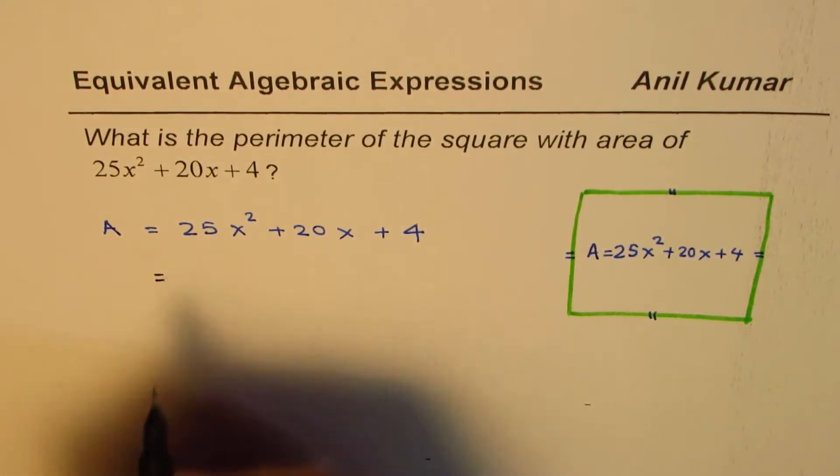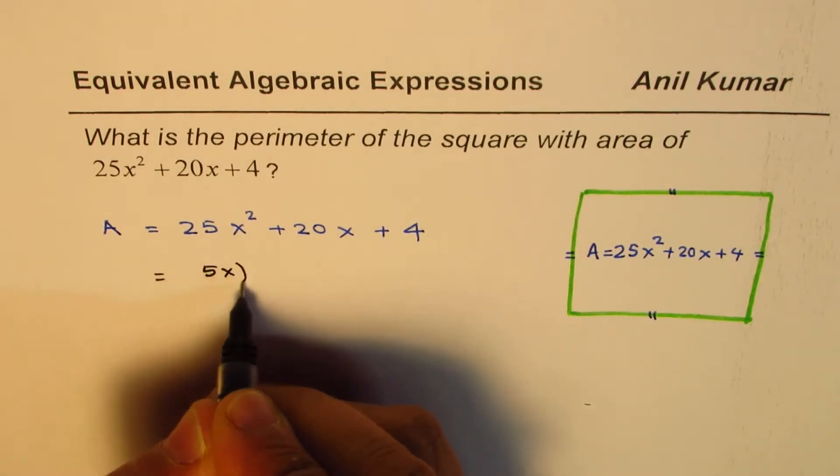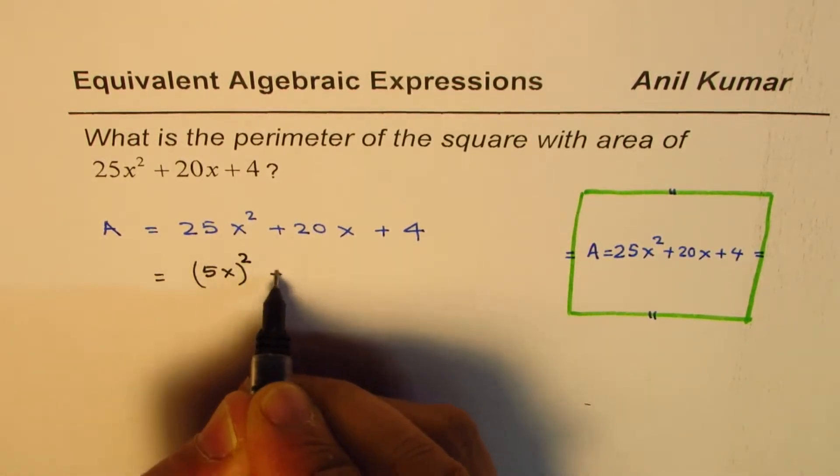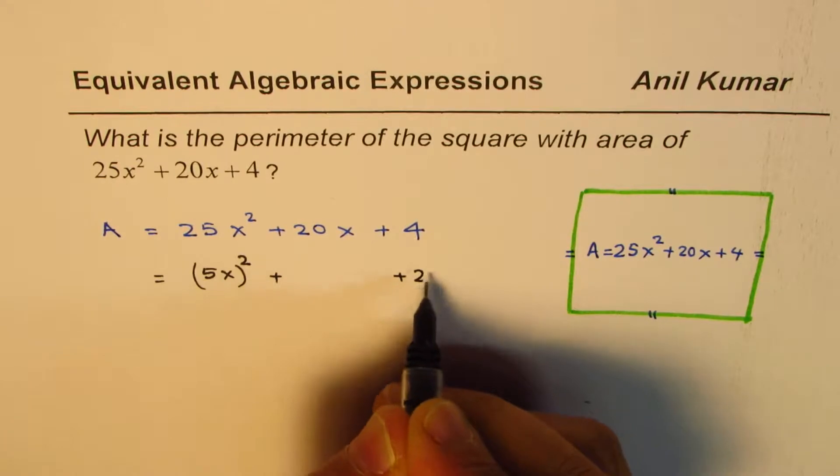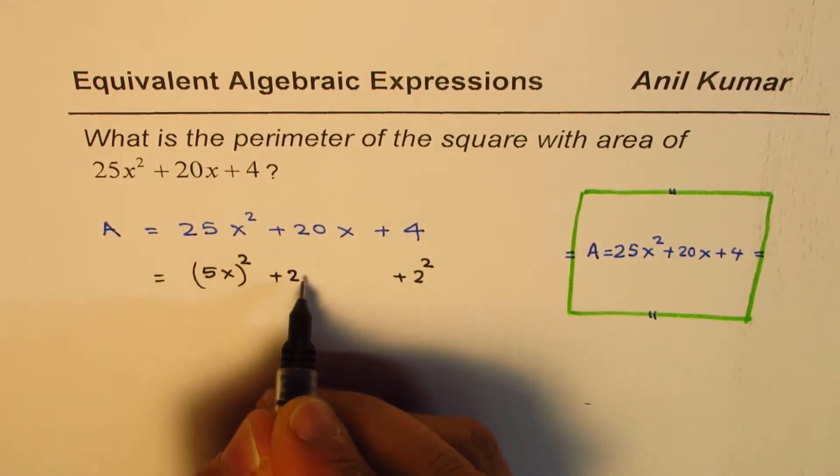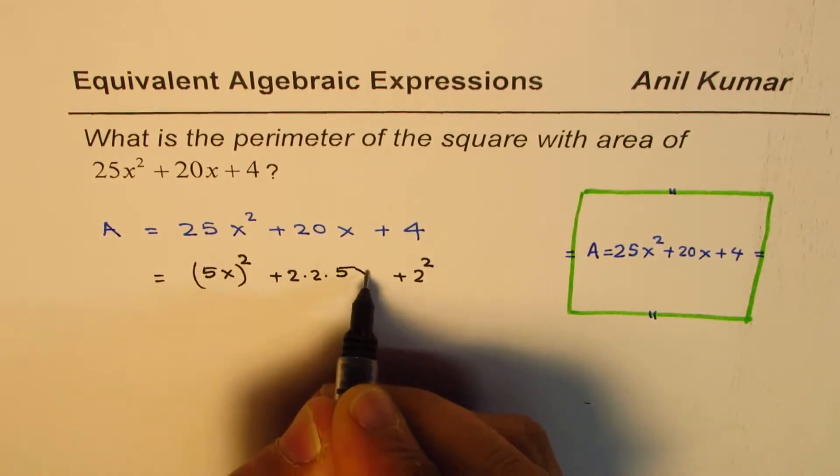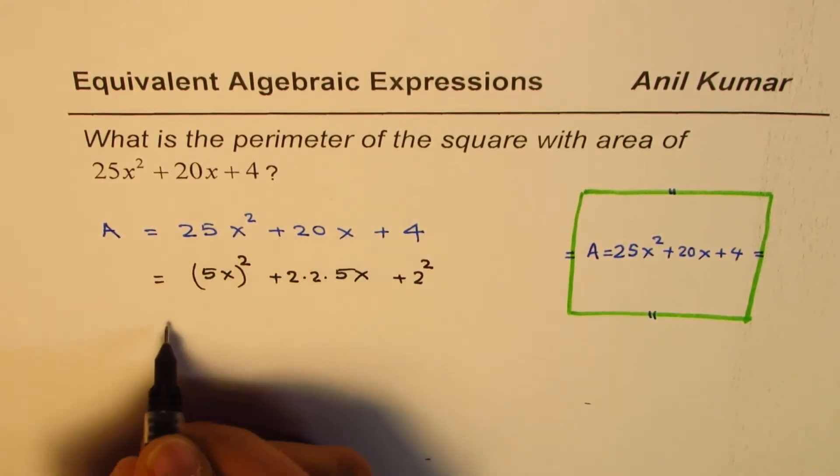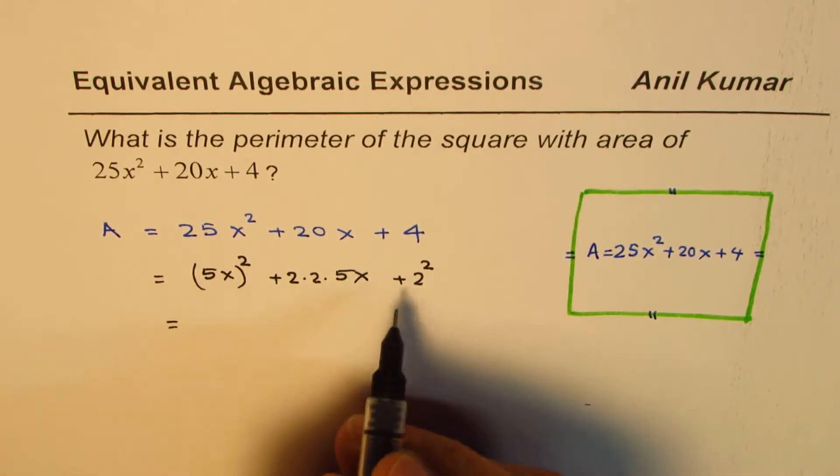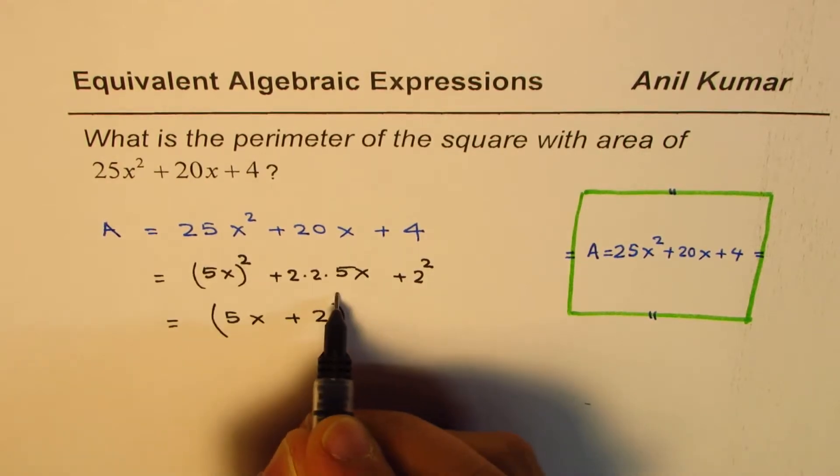Let us factor this area. This is a perfect square: 25x² can be written as (5x)², 4 can be written as 2², and the middle term 20x can be written as 2 × 2 × 5x. Therefore, we can factor this as (5x + 2)².